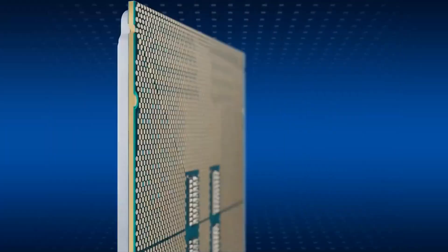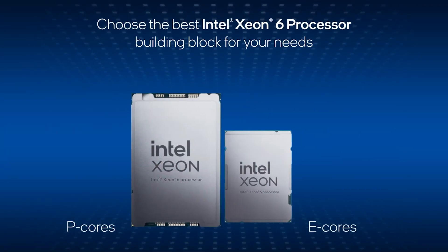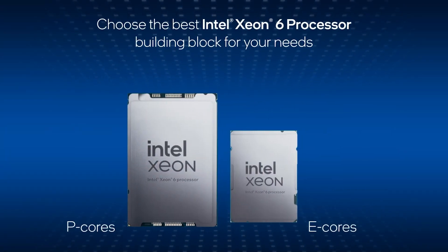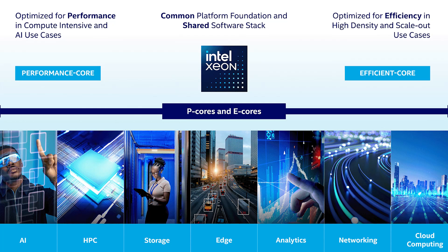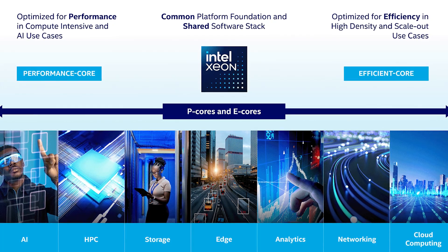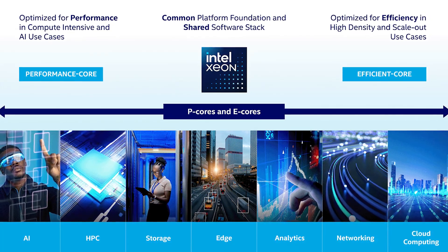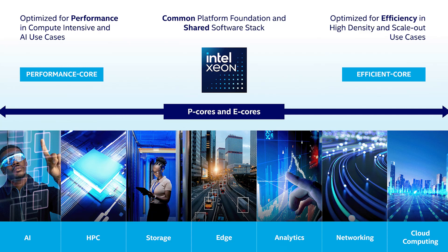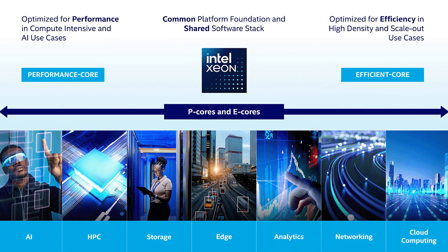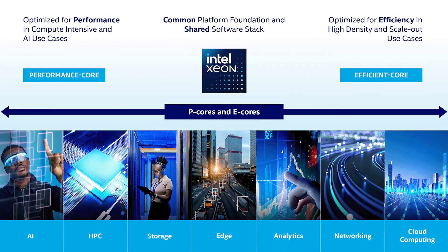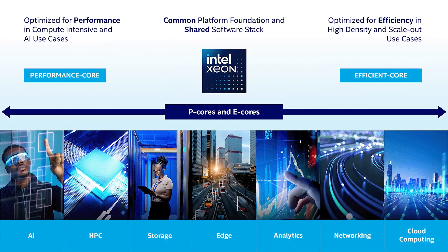Unlike Intel's desktop Core i CPUs which have a mixture of P and E cores, Xeon 6s have either P or E cores, but not both. The Xeon 6 processors with P cores, known as Xeon 6900 or Granite Rapids, provide the highest performance, making them the ideal choice for AI and HPC workloads.